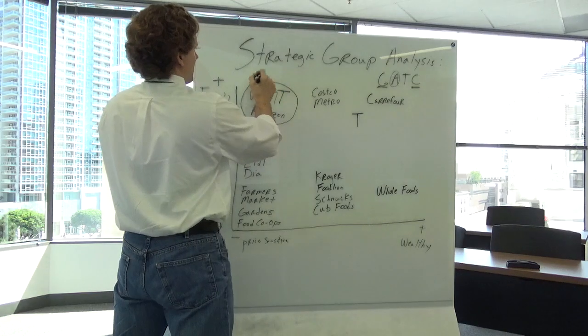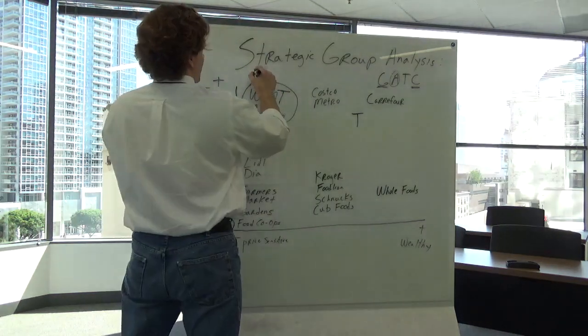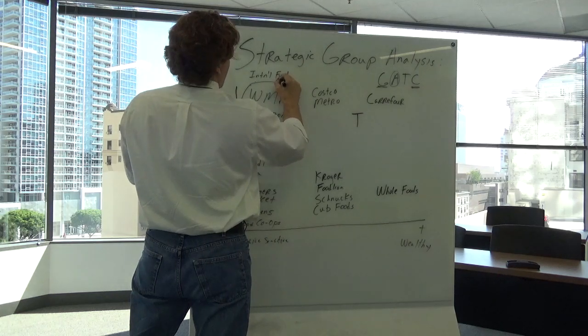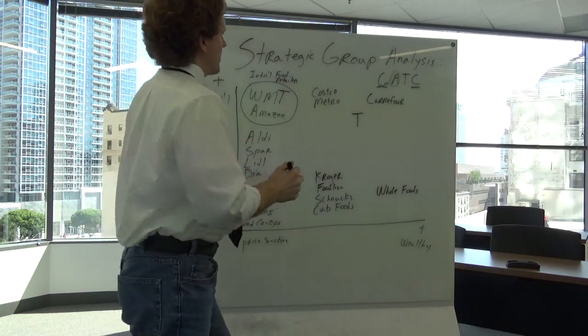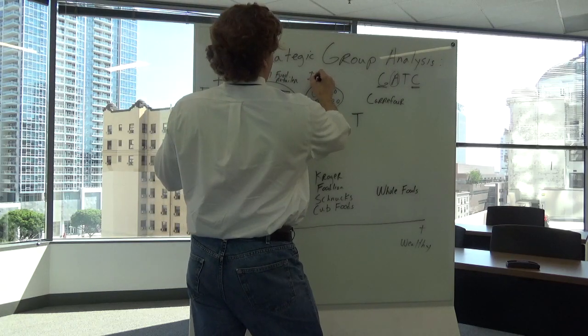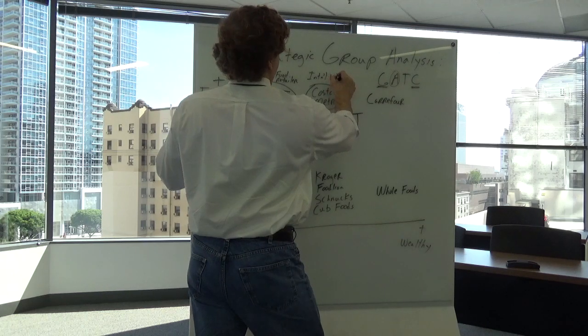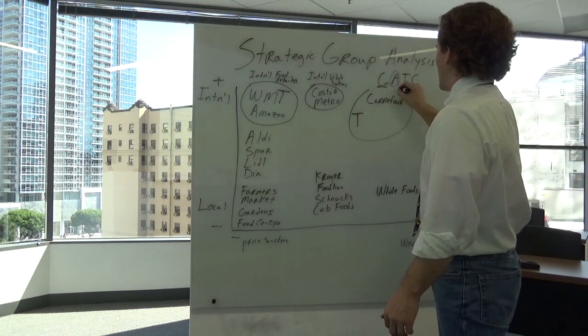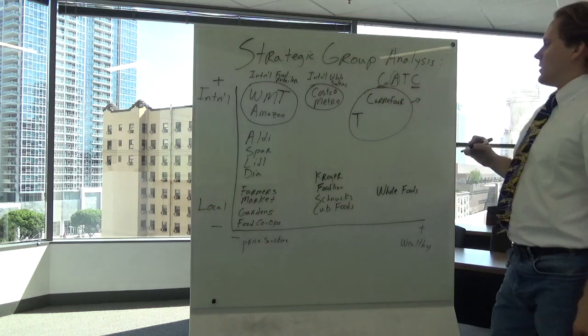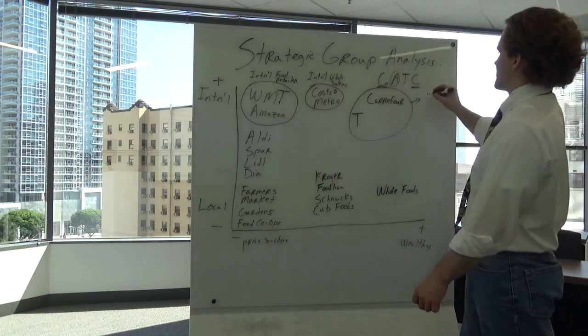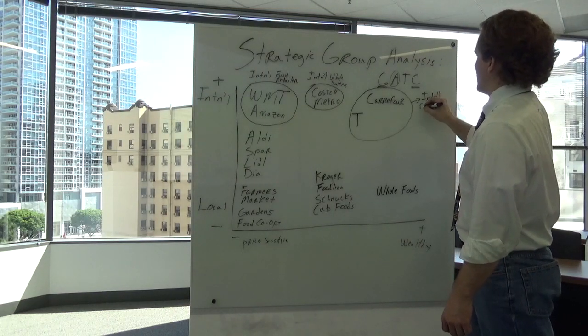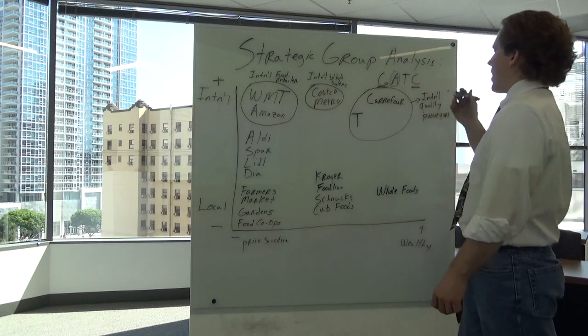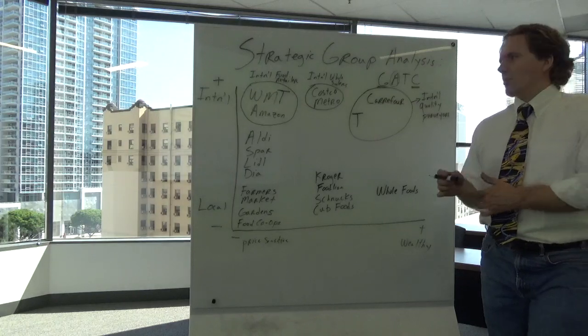We might call these, I don't know, but you need to come up with the names. So you might say international retail, international food retail. For Costco and Metro, you might say international wholesalers. For Carrefour and Target, you might put them in a group of international quality purveyors.